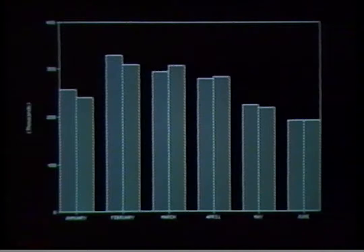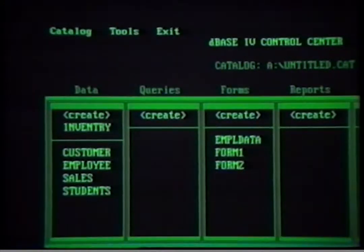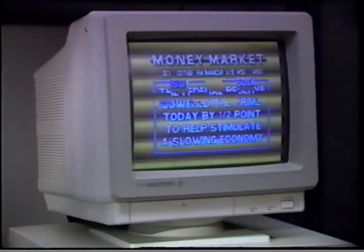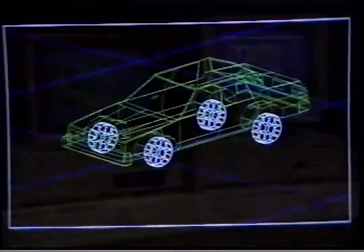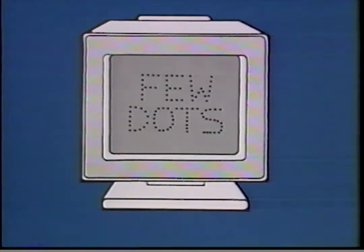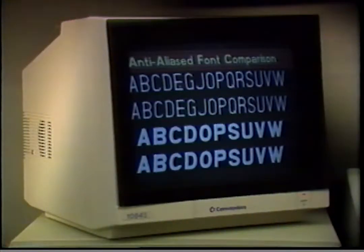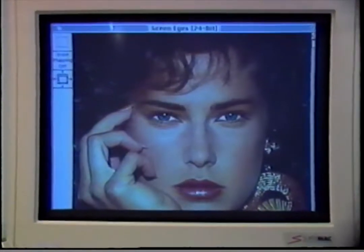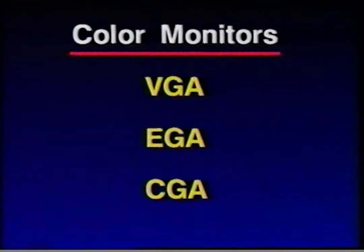Monitors are either monochrome — one color — or multicolor, often called color monitors. Most monochrome monitors are green, amber, or white. The ability to show detail is known as resolution. A monitor uses dots of light to form characters and graphics — low-resolution monitors use fewer dots and show less detail, while high-resolution monitors use more dots and can show more detail, with letters easier to read and graphics clearer. You may have heard the letters VGA, EGA, and CGA — these are different types of color monitors.